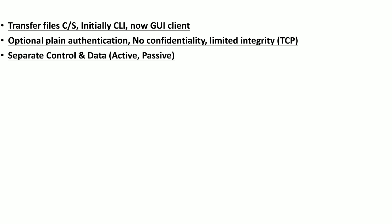FTP uses separate control and data connections. The control connection is used to control the communication, and the data connection is used to transport the data. It uses two forms of data connection: active FTP and passive FTP, which will be explained later in this video.